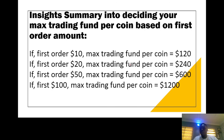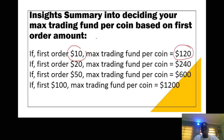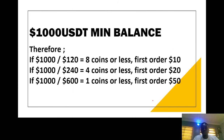In summary, when deciding your maximum trading fund based on first order amount: if picking ten dollars with one coin, you should have 120. If picking two coins with ten dollars, you should have 240. If picking one coin at twenty dollars, you should have 240 in your wallet. If picking one coin at fifty dollars, you should have 600. If picking one coin at one hundred dollars, you should have 1200 in your wallet. This is just for this period, but when the market picks up you may not need all of this — but you'll be making more profit anyway.